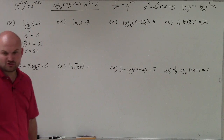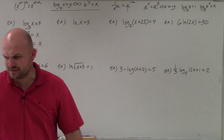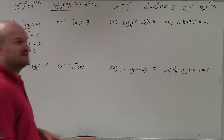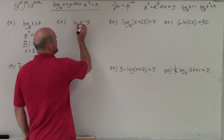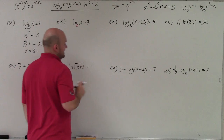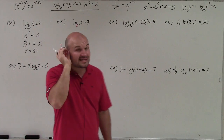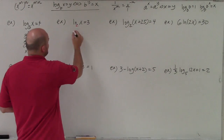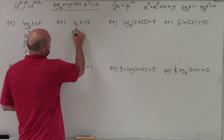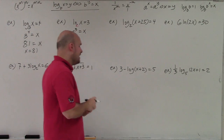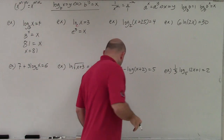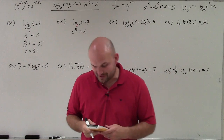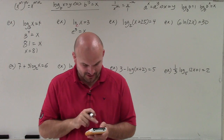The next one trips up a lot of students because they don't see the base. They ask, what is the base for ln? Remember, the base for ln is e. I can still do the same thing — rewrite this in exponential form — so it's e to the third power equals x. However, since e is an irrational number, I'm going to have to use my calculator for this one.